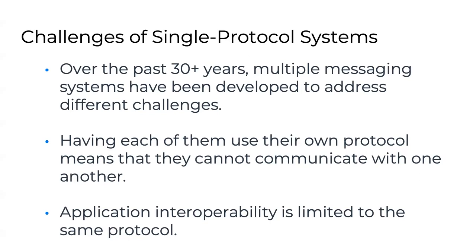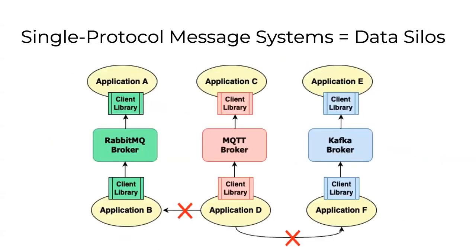If I'm publishing data from one application, I want to be able to consume it in another. But that consuming application has to use my client library to go get data stored in a silo in this messaging system. For example, if application D is publishing to MQTT, application B using Kafka can't get it — there's no easy way to move data laterally between these systems.